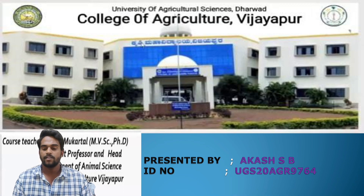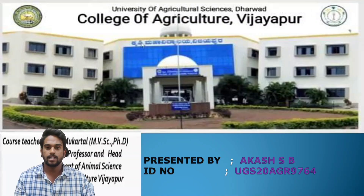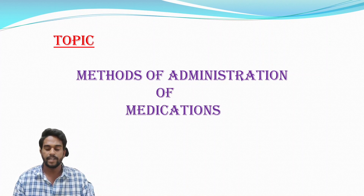Hello everyone, myself Akash S.B. My ID number is UGS20HGR9764. In the course of livestock and poultry healthcare, my assigned topic is methods of administration of medication.